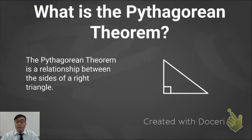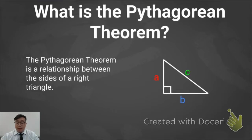The Pythagorean Theorem is a relationship between the sides of a right triangle. The legs of the right triangle — the two shorter sides — are usually labeled A and B, and the longest side, the hypotenuse, is usually labeled C.